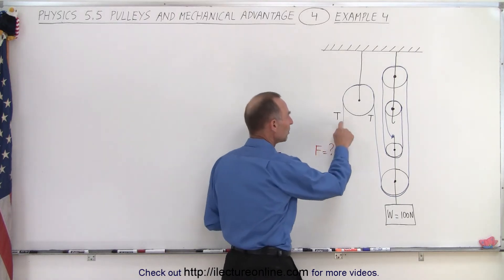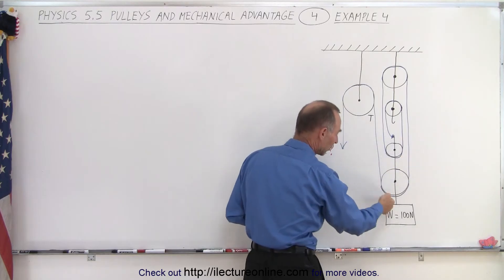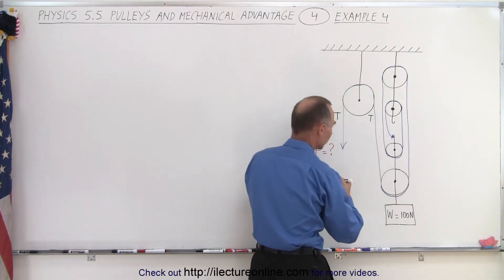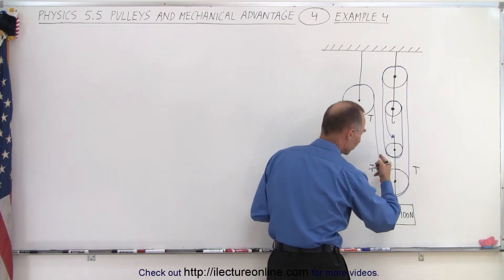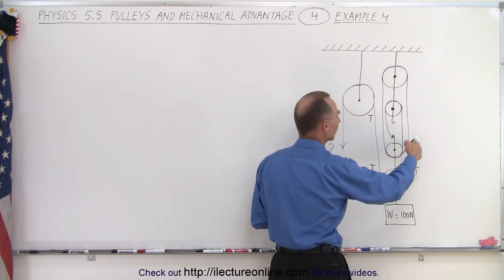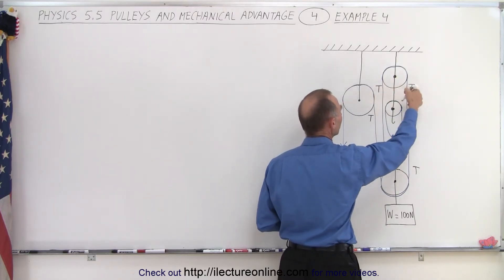So we can see that tension would be the same on both sides here. Now we'll follow the string over here and we can see that around here the tension must also be T and the tension on the other side must be the same because it just goes around this pulley.